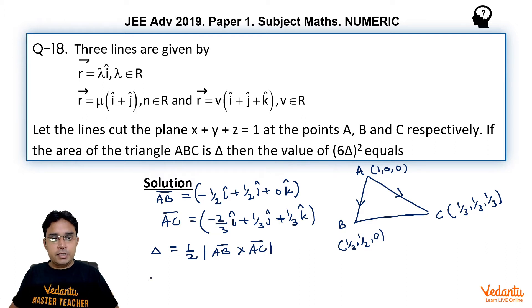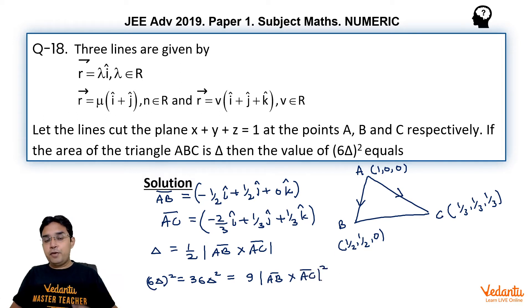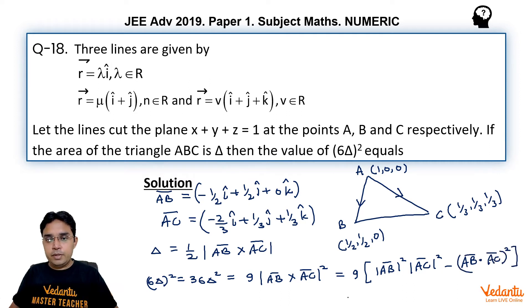Now we know this area delta is actually half times magnitude of AB cross AC. In fact, we need 6 delta square, 6 delta whole square which is 36 delta square. So it would be 36 into 1 upon 4, so 9 here, into AB cross AC whole square. Now you can find cross product also but we have a shortcut method that is Lagrange's identity. One very simple thing to use.